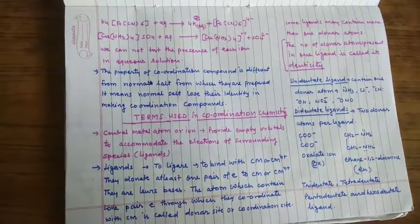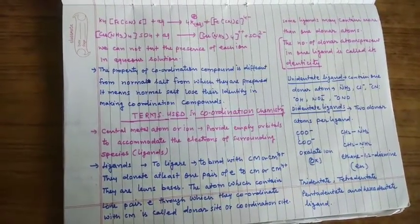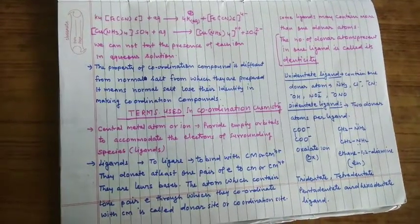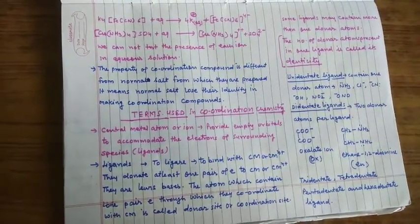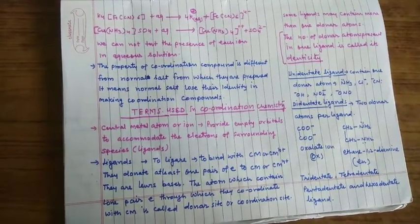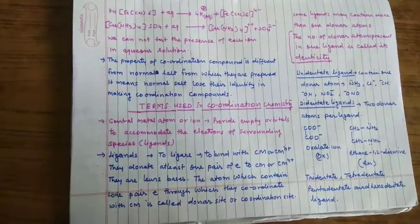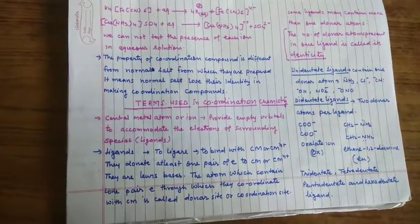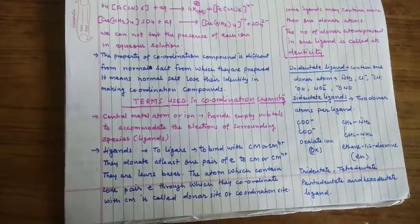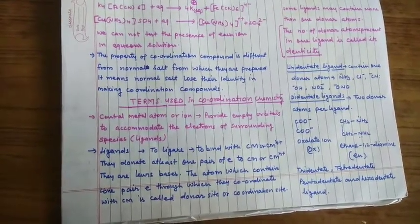Now in coordination chemistry certain terms are used. So let us see what are these terms. First is central metal atom or ion. They are generally transition metals and sometimes non-transition metals also like magnesium. They accommodate the electrons coming from the ligand by providing them empty orbitals.